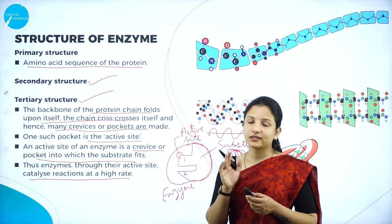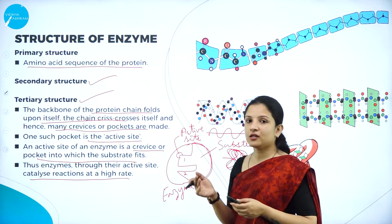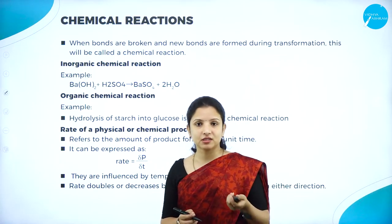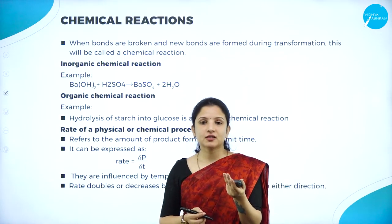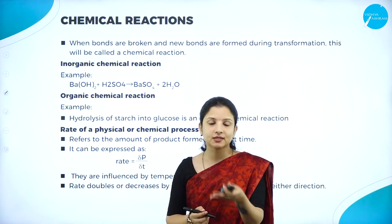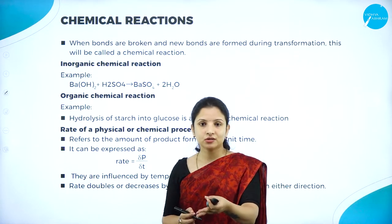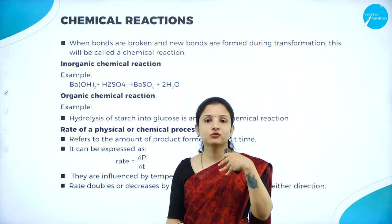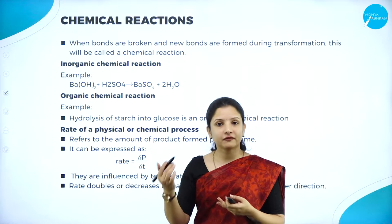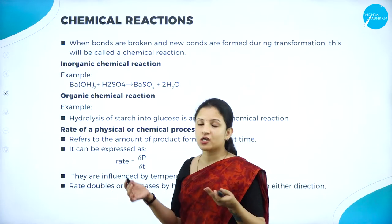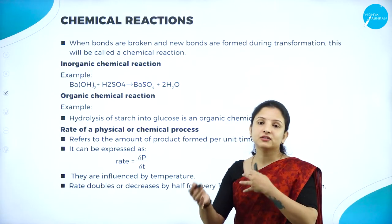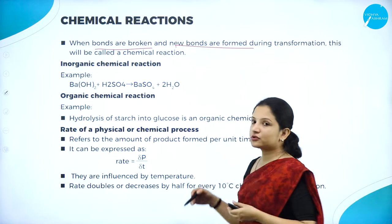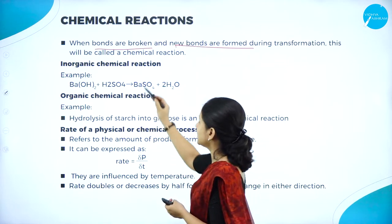Reactions are of different types — physical and chemical. A physical reaction is something we can see, like the melting of ice or water evaporating when boiling. A chemical reaction involves the breaking or making of bonds. When bonds are broken and new bonds are formed during transformation, that process is called a chemical reaction.